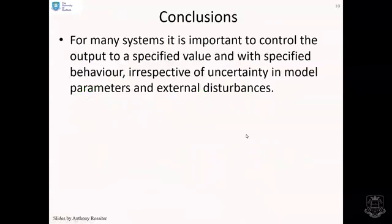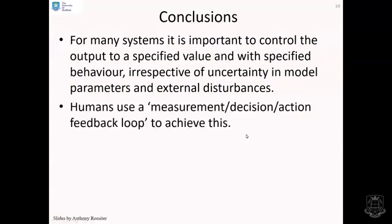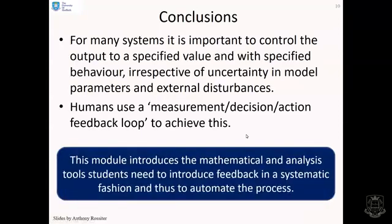Conclusions: for many systems, it's important to control the output to a specified value and with specified behavior, irrespective of uncertainty in model parameters and external disturbances. Humans use a measurement-decision-action feedback loop to achieve this, and we've shown that works. This module is going to focus more on the mathematical and analysis tools that students will need to introduce feedback in a more systematic fashion. Obviously, I've just shown you some conceptual pictures and ideas here, but we need to be a lot more systematic and analytical in how we tackle this.